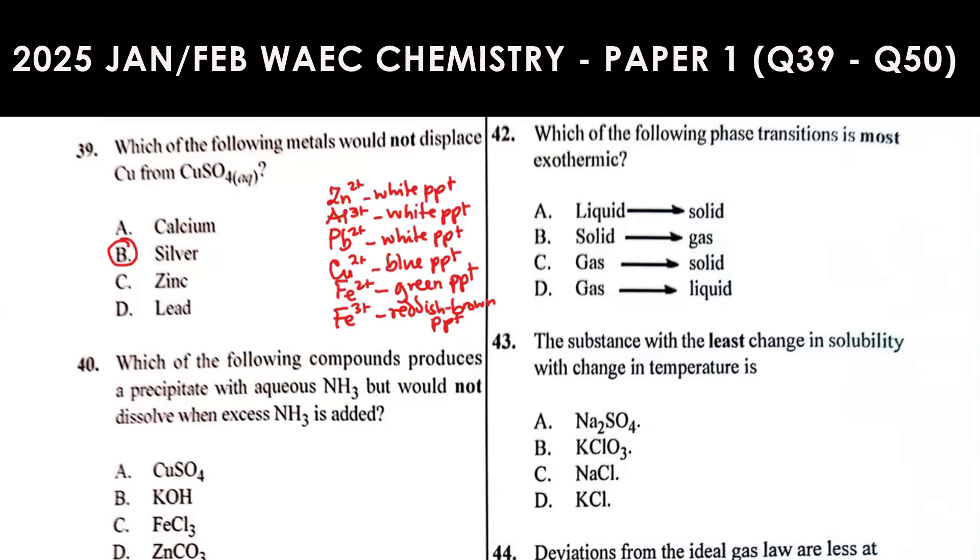But when the ammonia is added in excess, it is only the zinc that dissolves. The zinc dissolves in excess ammonia to give a colorless solution.